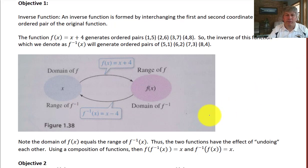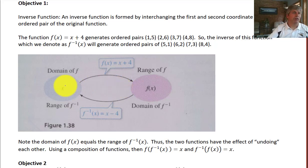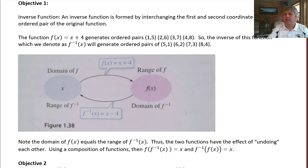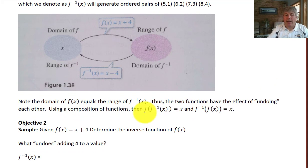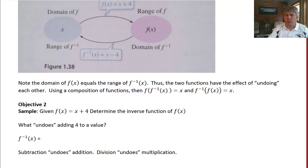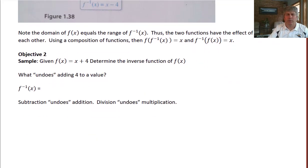Graphically, we can see that the domain of our function is the range of our inverse function, and the range of our function is the domain of our inverse function. So the two functions have the effect of undoing each other. Using a composition of functions: f of the inverse of x equals x, and the inverse of f of x equals x. We'll apply these to some expressions to make this make a little more sense.